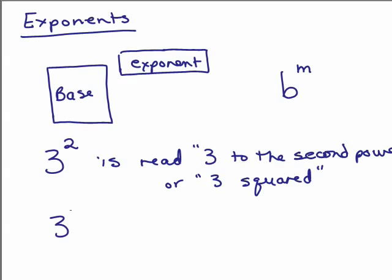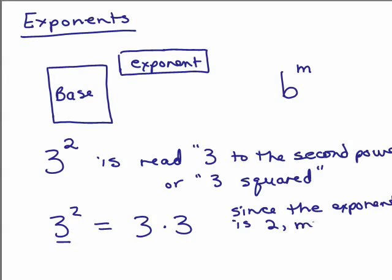So what it means is you take the base and you multiply it times itself however many times you see the exponent. Since the exponent is 2, multiply the base times itself 2 times.